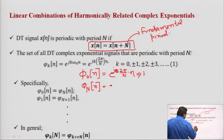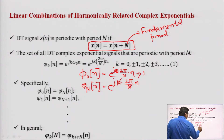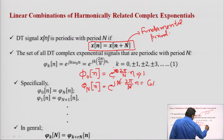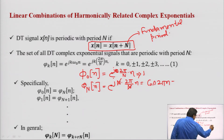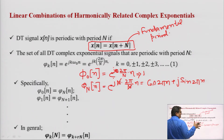If we put k = N in the exponent, we get e^(j N · 2π/N · n), which simplifies as the n cancels, giving e^(j 2π n). This becomes cos(2πn) + j sin(2πn), where n takes values 0, 1, 2, 3, 4, 5, 6.